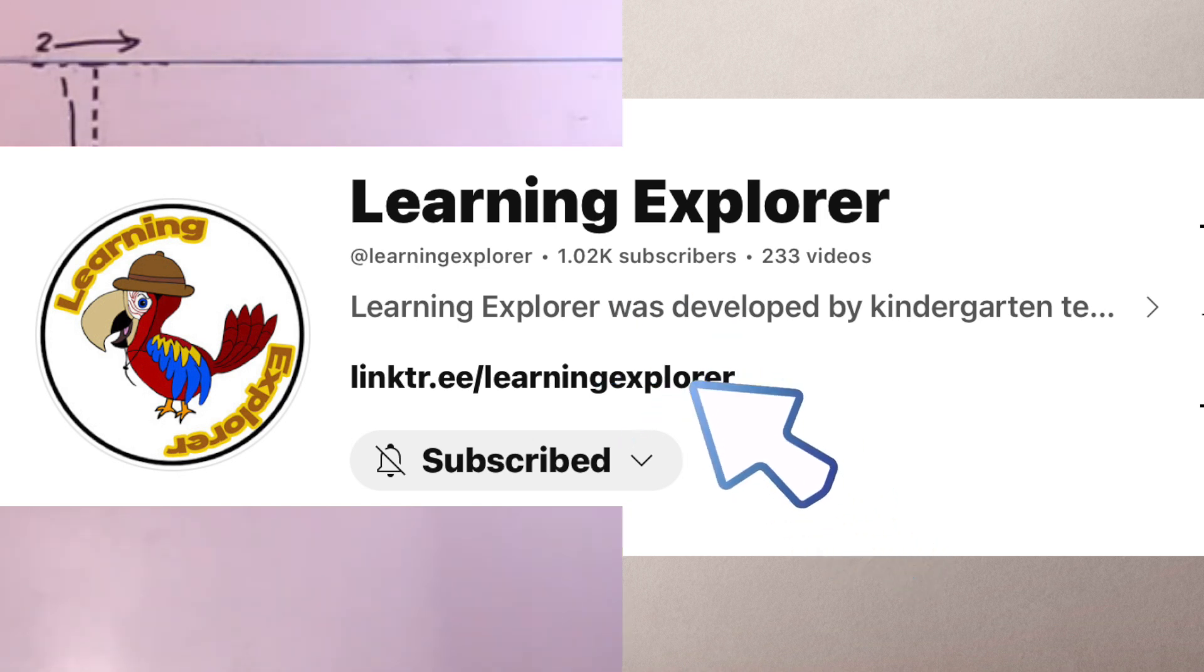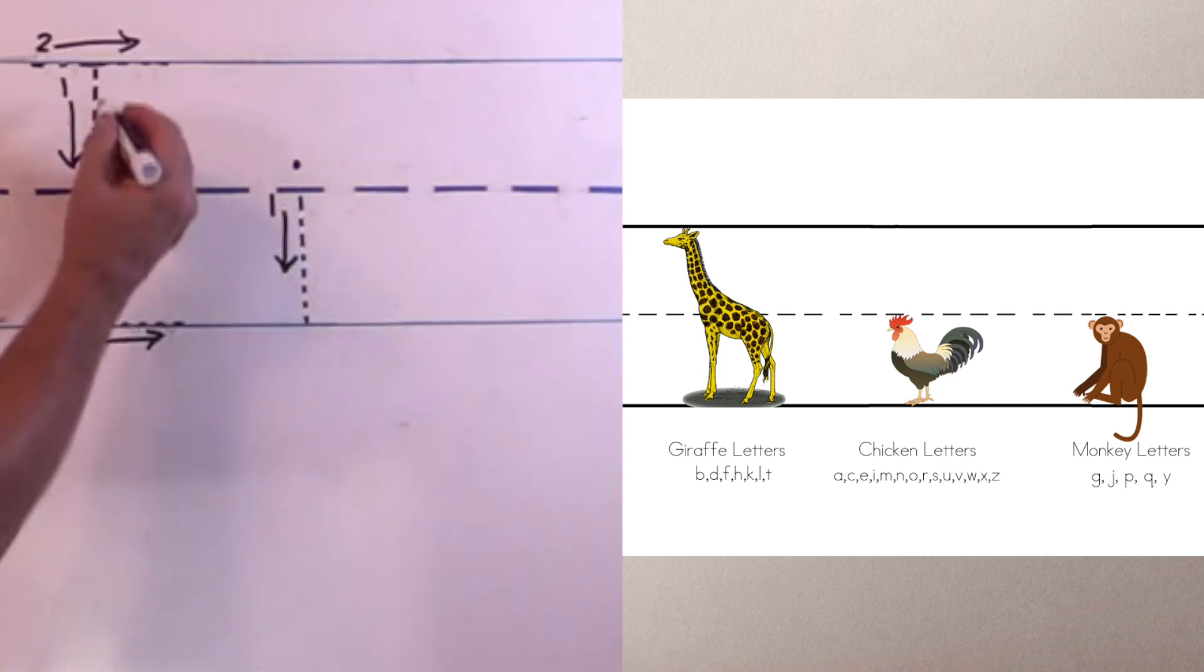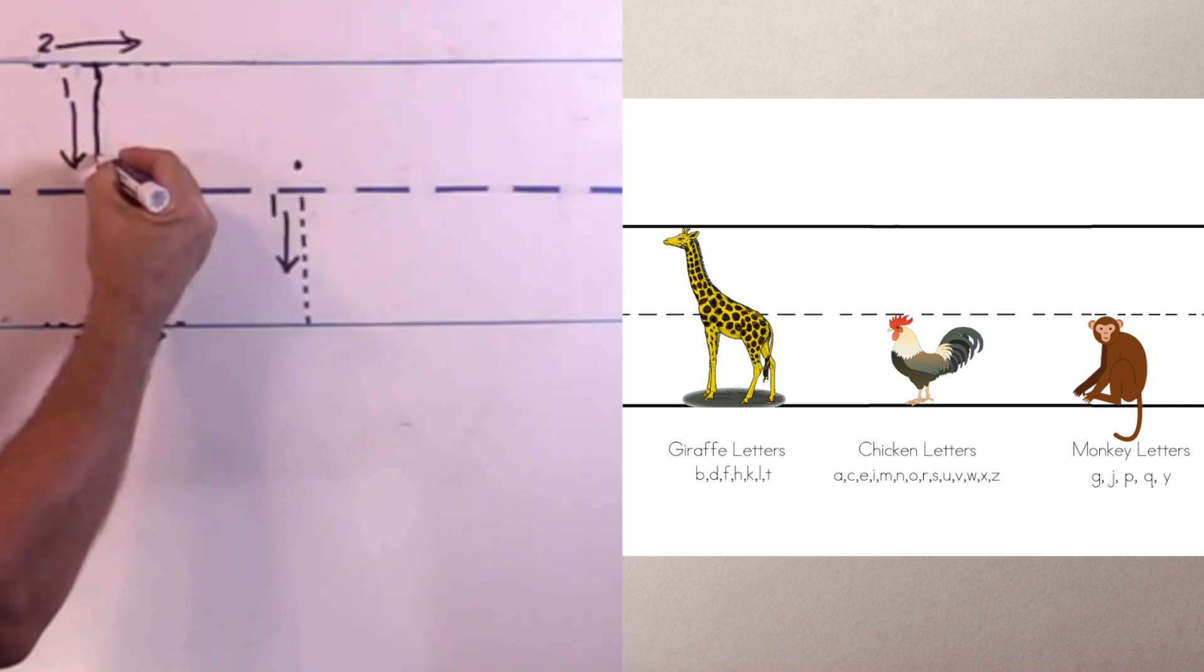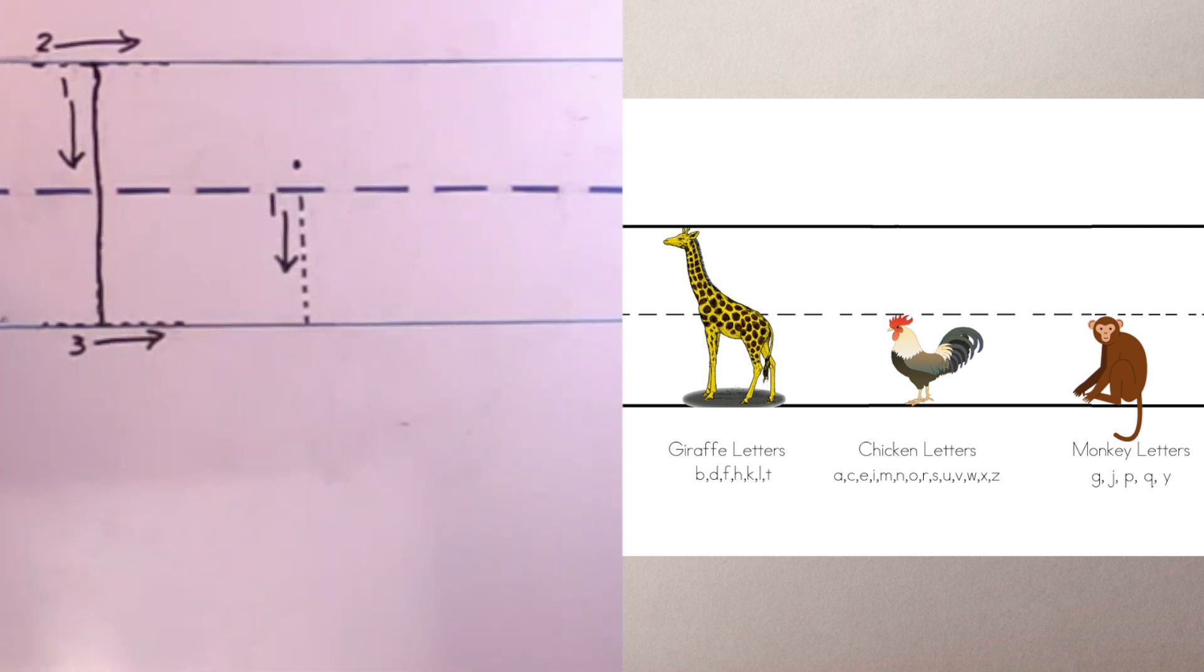All right, are you ready to start the letter I? Here we go. When I do the uppercase letter I, I start at the top, and I go all the way down to the bottom. Are you starting it the same way? Are you following along with me? Keep going all the way to the bottom. When I get to the bottom, I stop. And I pick up my pen.